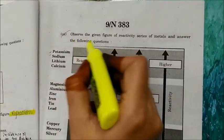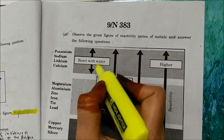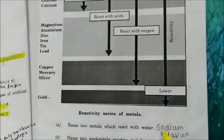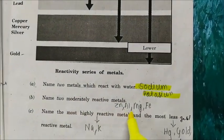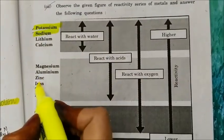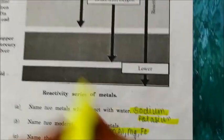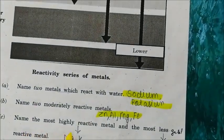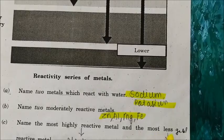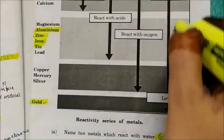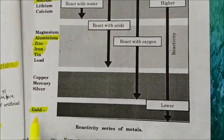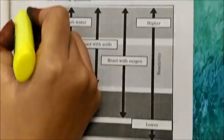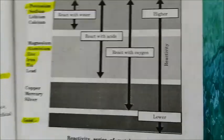Observe the reactivity series of metals. Metals that react with water: sodium and potassium. Name two moderately reactive metals: zinc, aluminium, iron, tin, etc. The most highly reactive metal is potassium, and the least reactive metal is gold.